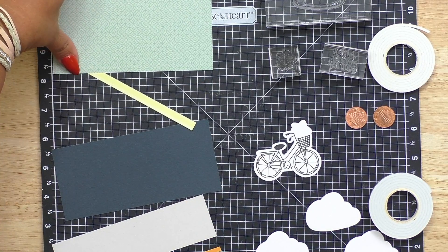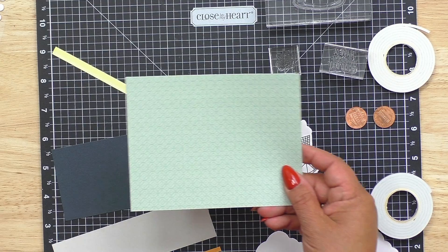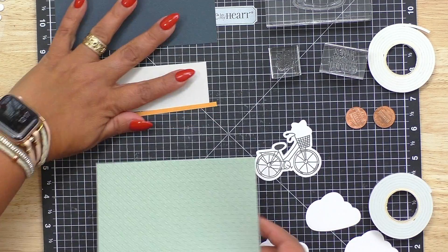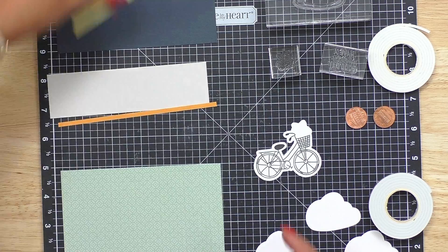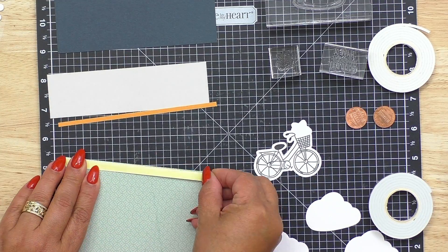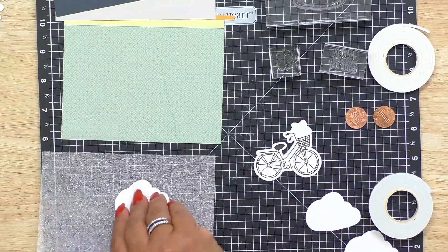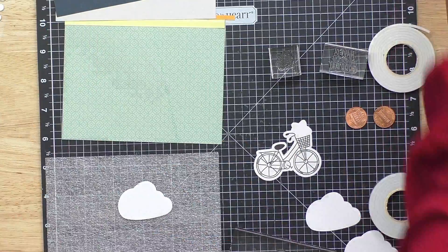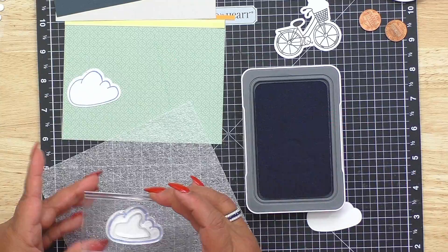So here is our card front right here. You can see this one. This goes on our card base, but let's build first, shall we? Okay, now I'm just going to add all of these pieces that have been pre-cut for me. Let's stamp our cloud. So simple, so cute.